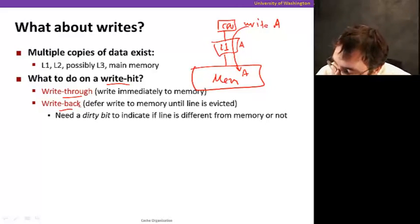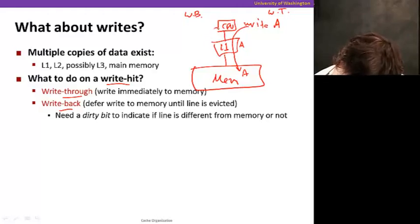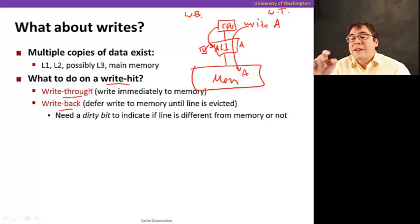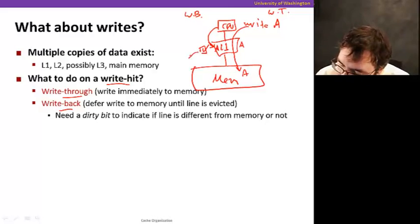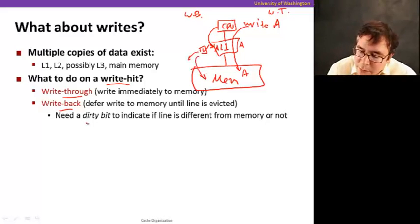Now write-back works as follows. This is write-through. With write-back, when the CPU writes to A here, it just writes to the cache. And now there's a little bit here that gets set that says, okay, this data is now dirty, it means that the copy in memory might not be the same. So whenever this line is displaced, it's kicked out of the cache, it goes and sends the data to memory. So we need a dirty bit to indicate that the line is different.